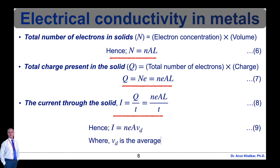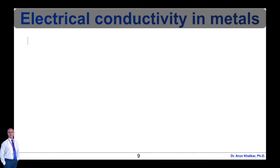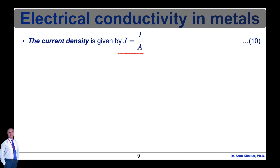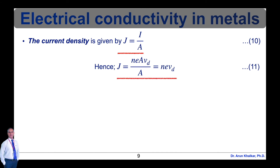Hence the current equation is I = n × e × A × V_D, where V_D is the average drift velocity of electrons — equation 9. The current density is defined as J = I / A — equation 10. Substituting the value of I, J = n × e × A × V_D / A. The areas cancel, giving the current density J = n × e × V_D — equation 11.